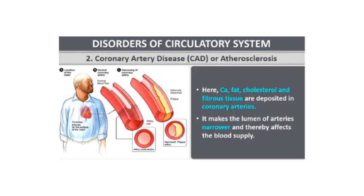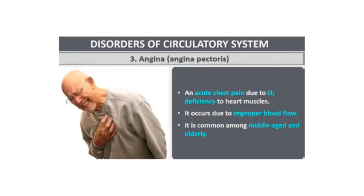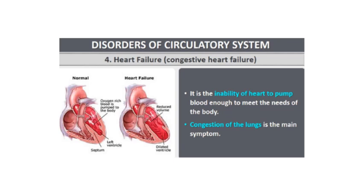The second disease is coronary artery disease. Fat, cholesterol, and fibrous tissue are deposited in the coronary artery, narrowing the lumen — this is also called atherosclerosis. This can cause acute chest pain due to oxygen deficiency to the heart muscle from improper blood flow, commonly seen in middle-aged or older individuals. Coronary artery disease can lead to heart failure, where the heart is unable to pump enough blood to meet the body's needs, resulting in congestion of the lungs as one of the main symptoms.